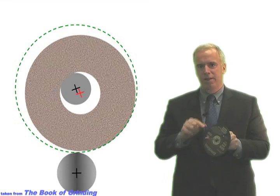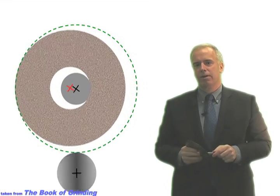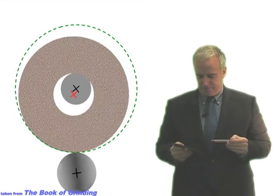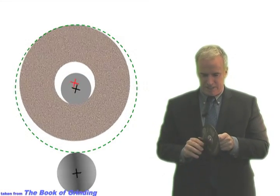Now if it was a dressed wheel, a little eccentricity is fine because we're going to dress away that eccentricity and get rid of it. But with an electroplated wheel, we never dress it, so what we have is an eccentric wheel.